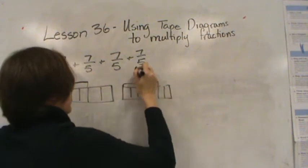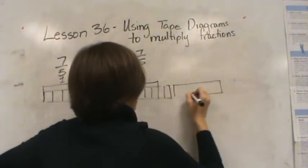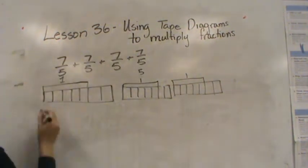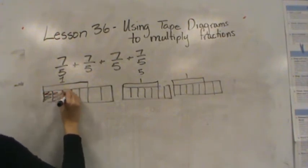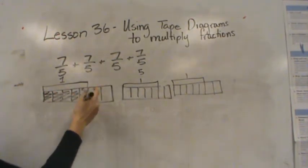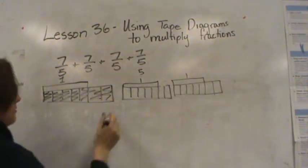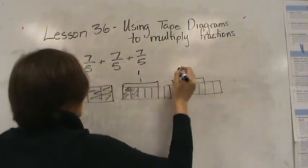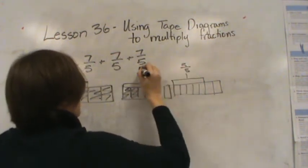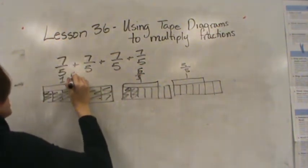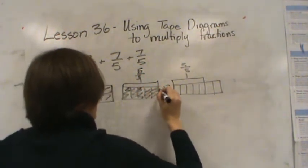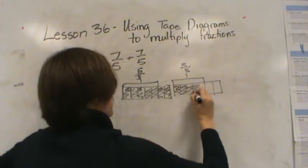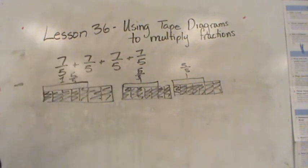Here's my whole, because my whole is fifths — I want my whole to be 5 equally sized parts. Now I have 7 of those fifths. So here's 5/5; I need 2 more fifths to make 7/5. This is equal to 1. So 5/5, 5/5, 5/5 — each is equal to 5/5, and I need 2 more to get me to 7/5. Then 5/5 and 2 more to get me to 7/5.